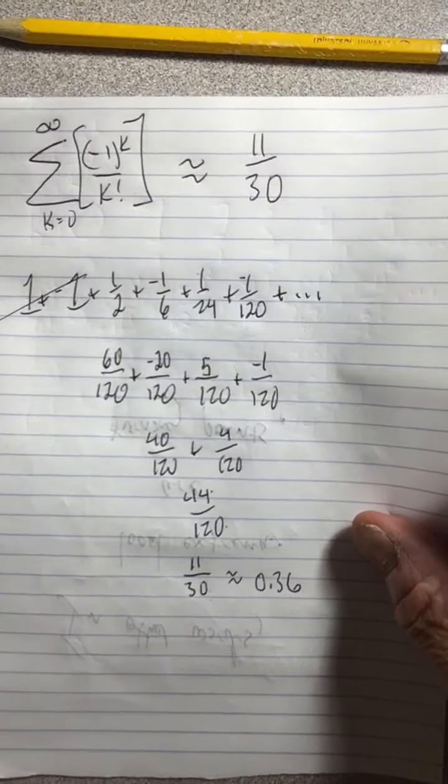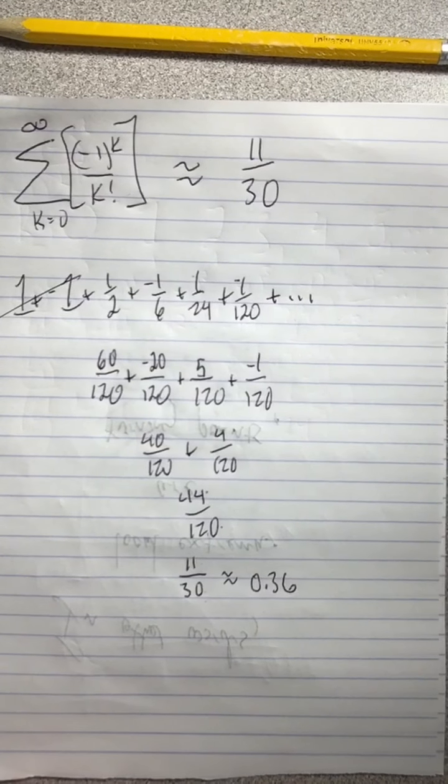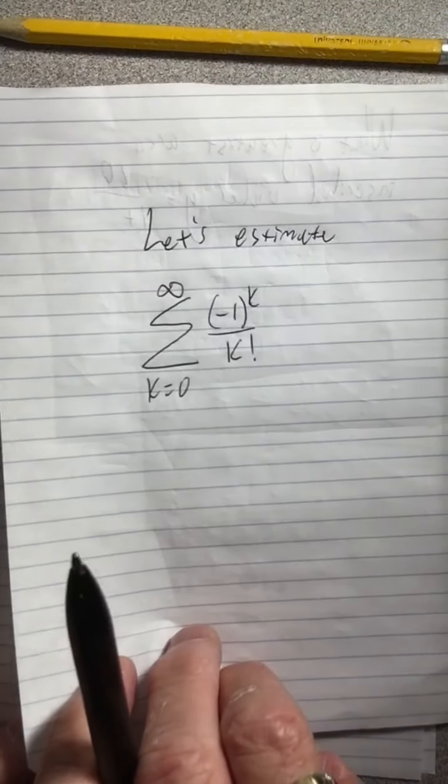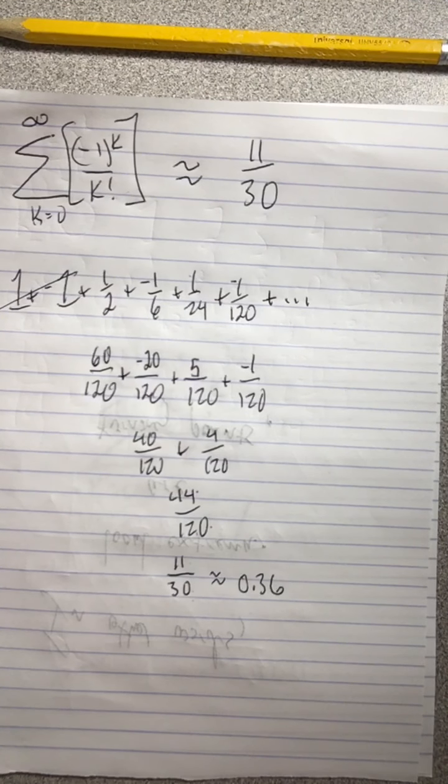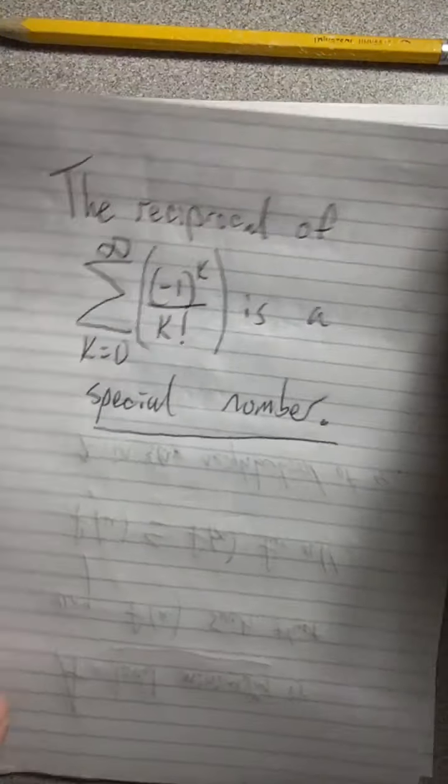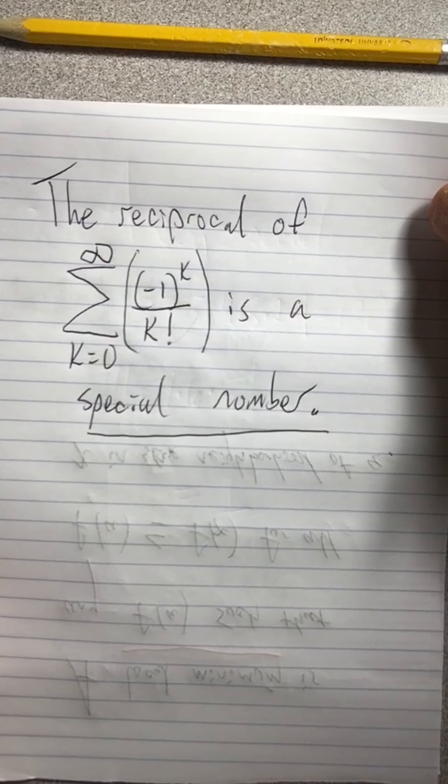Now, what we were trying to get, now that we've estimated... we've estimated this. Remember, what we were actually trying to get was that special number that was the reciprocal of this.